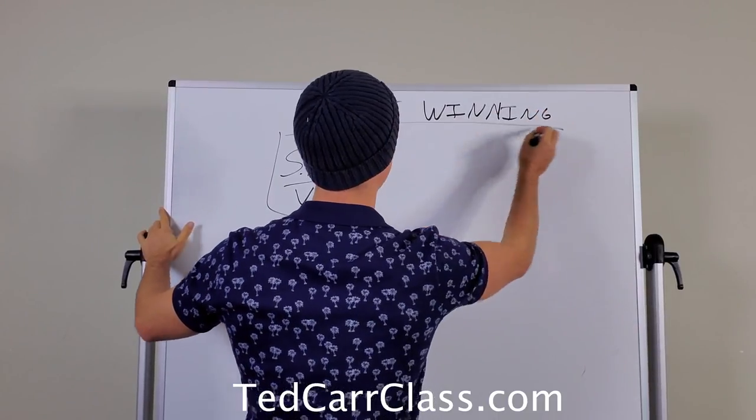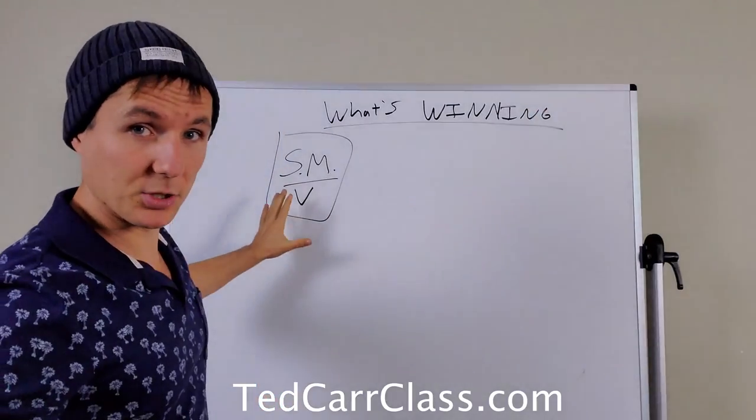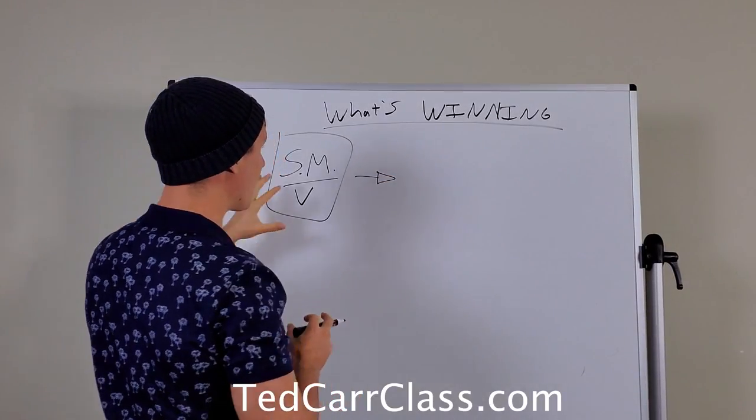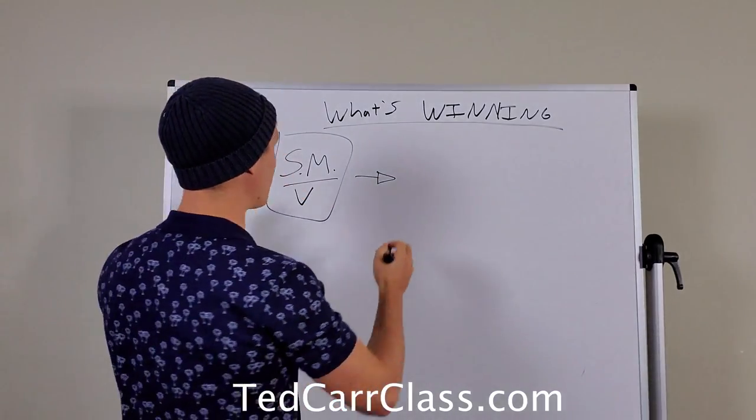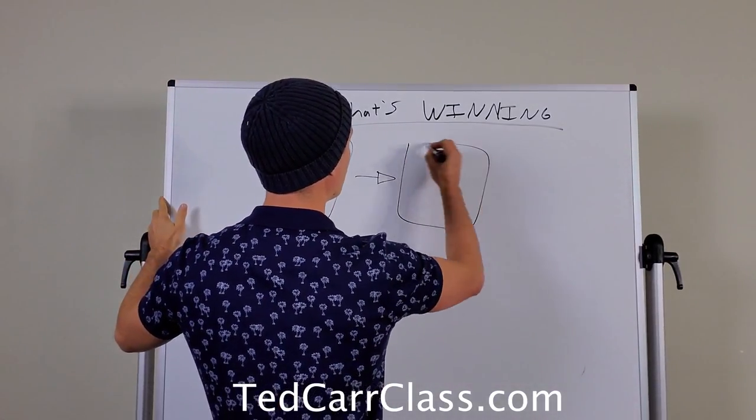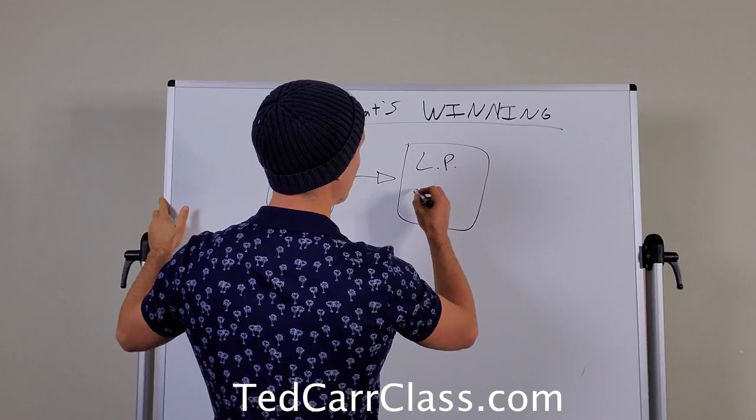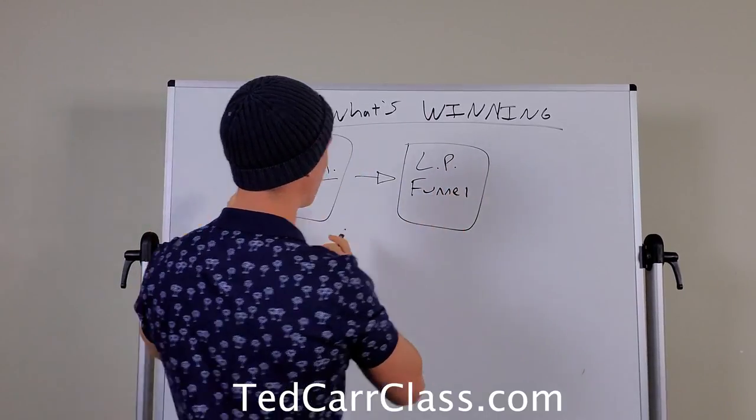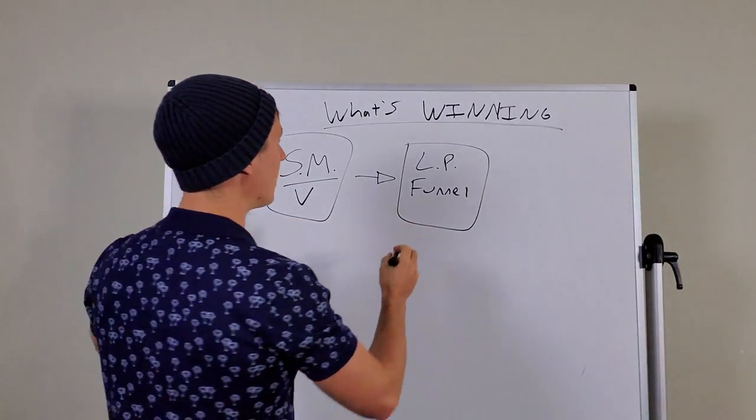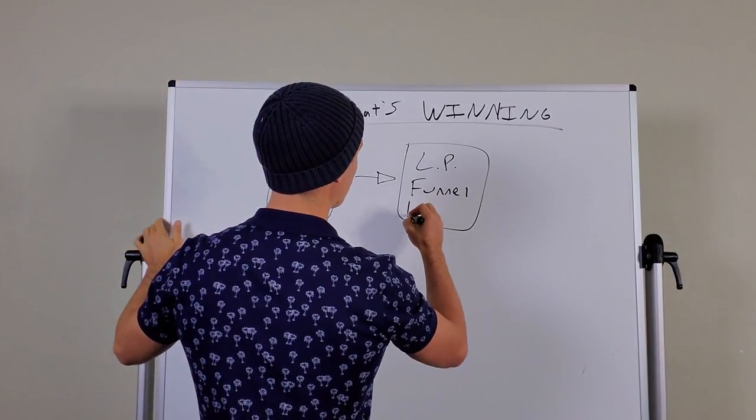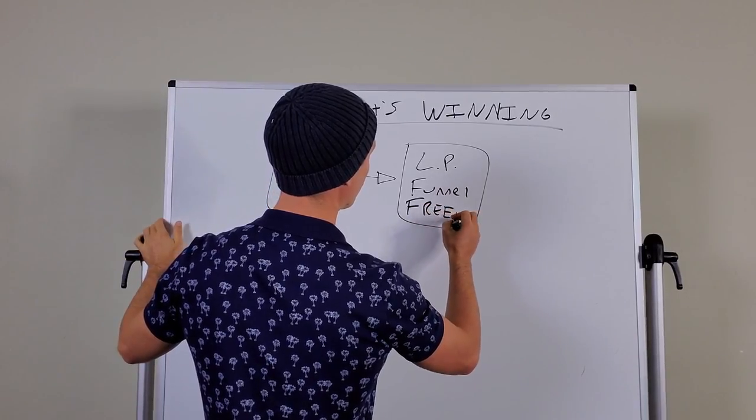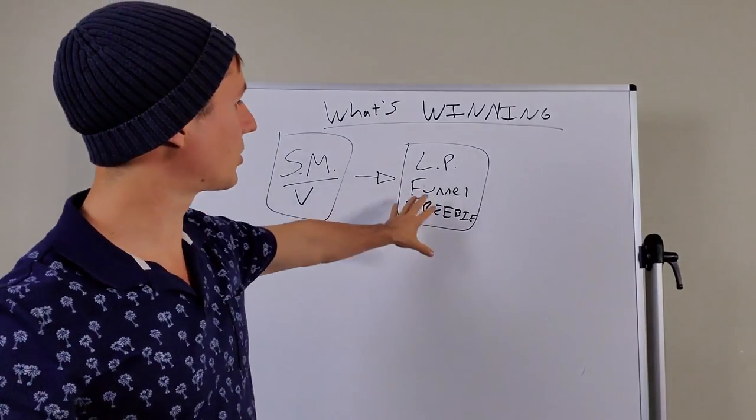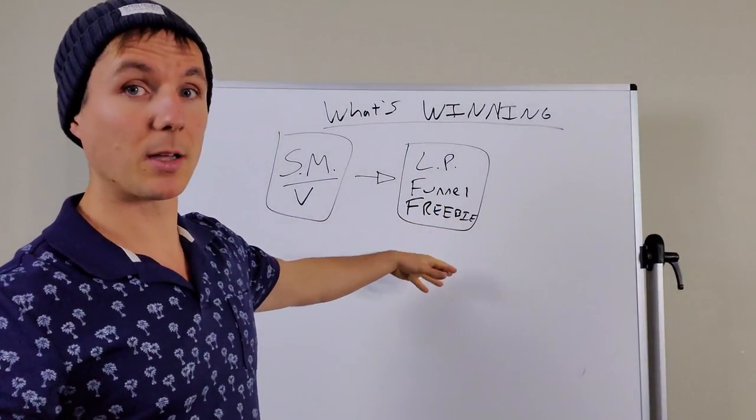This is what's winning. From social media, what they're doing is they're sending people to landing pages or websites or funnels. So we'll say LP, we'll say funnel, landing page funnel. And typically they're sending people from social media to the landing page funnel for something for free. So say it's a funnel and it's a freebie, some sort of freebie. Some sort of hey, go get my book, go get my course, go check out this interview, whatever. Get off of social media and go check out this funnel. Go into your email in exchange for this freebie.